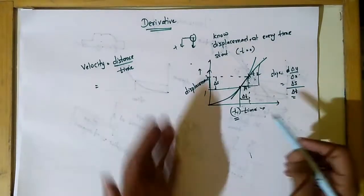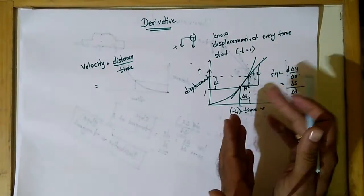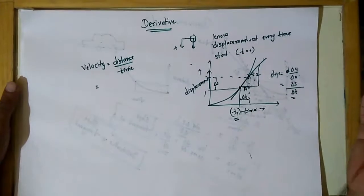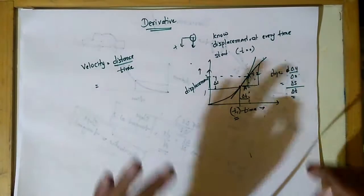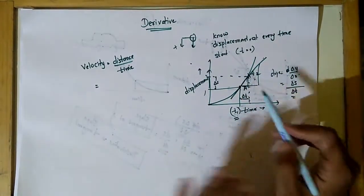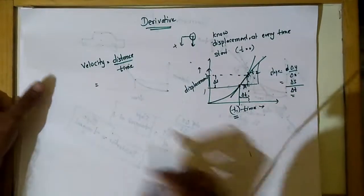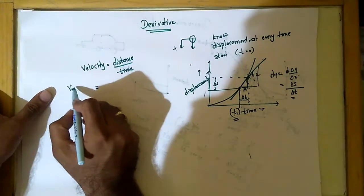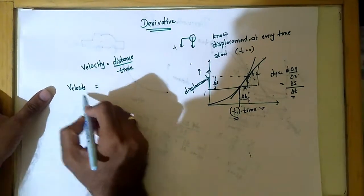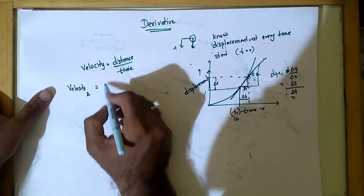Now if I take delta t sufficiently large, in between that time maybe the velocity might have changed. So to know the velocity at exactly that point, what I should do is I should try to minimize delta t as small as possible.